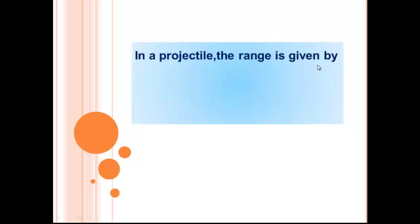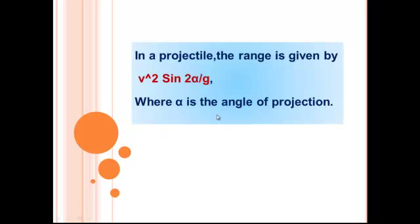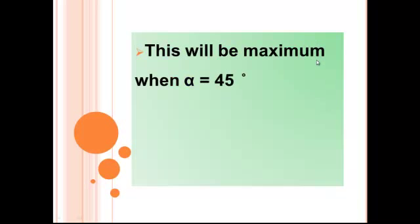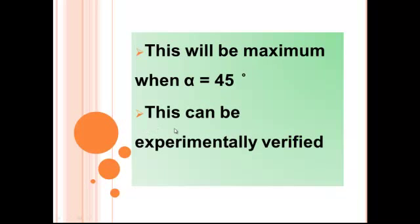Projectile. In the projectile, the range is given by v squared sine 2 alpha divided by g where alpha is the angle of projection. This will be maximum when alpha is equal to 45 degrees. This can be experimentally verified.